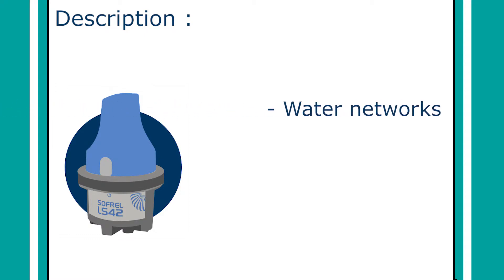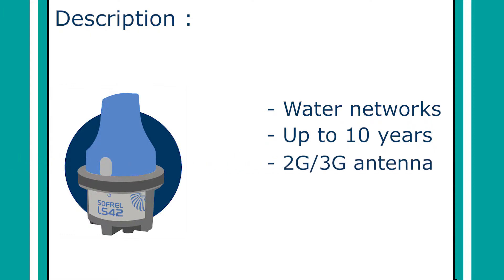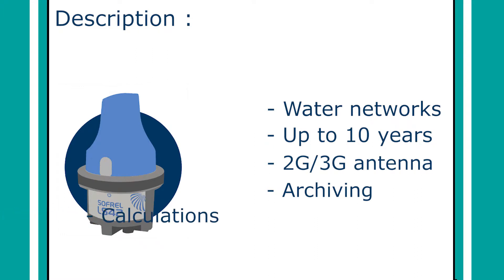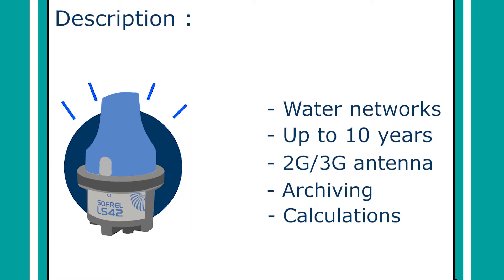A data logger is designed for water networks — completely waterproof and with an autonomy of up to 10 years. It is able to communicate in difficult environments thanks to high-performance 2G and 3G antennas. It collects information on your network, creates archives, and performs calculations of average flows, etc. Every day it wakes up and connects to the internet via the GSM network, and when connected, depending on the reception configured, all archived data collected will be sent.